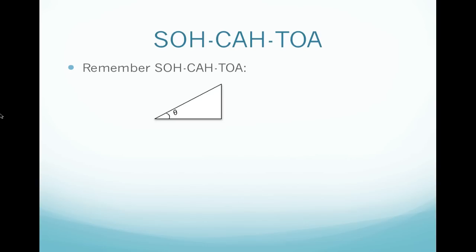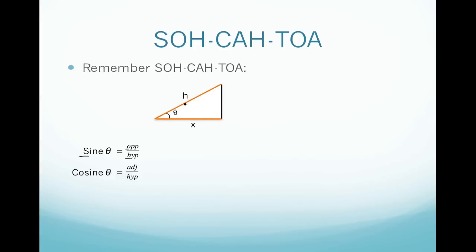Remember SOHCAHTOA from earlier this year. SOHCAHTOA means that sine is equal to opposite over hypotenuse — SOH. So on this particular triangle, we've got our sine of theta. The side opposite is going to be the side that does not touch that angle, so this would be Y, divided by our hypotenuse. Cosine of theta is going to be adjacent over hypotenuse, so that will be X divided by H. Tangent is opposite over adjacent, so Y divided by X.